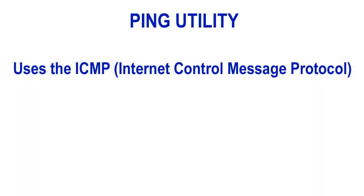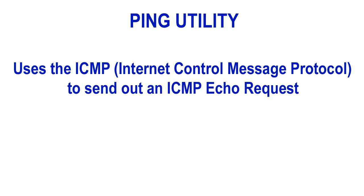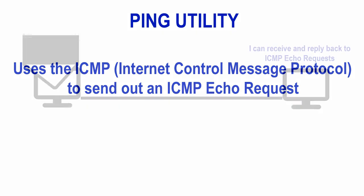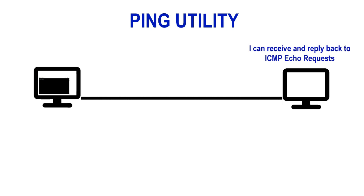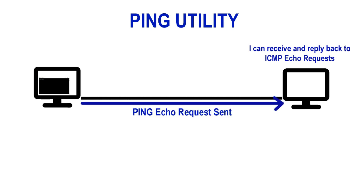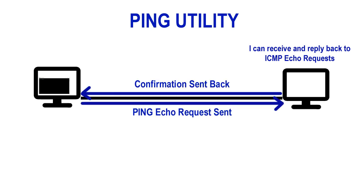The ping utility in computer networking uses ICMP, or Internet Control Message Protocol, to send out an ICMP echo request to the other node you're trying to ping. If the other machine or node can receive that test packet and reply to it, it will. When it does, you see a confirmation in your command line interface window reporting success. Therefore, the ping utility can help a network admin or technician confirm that the other node is indeed connected on the same network and is responding.